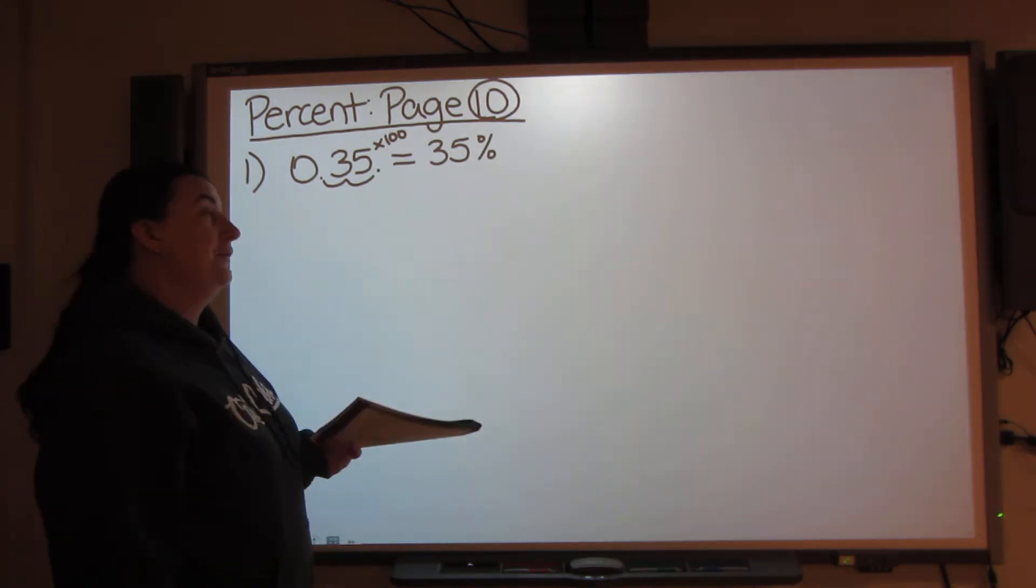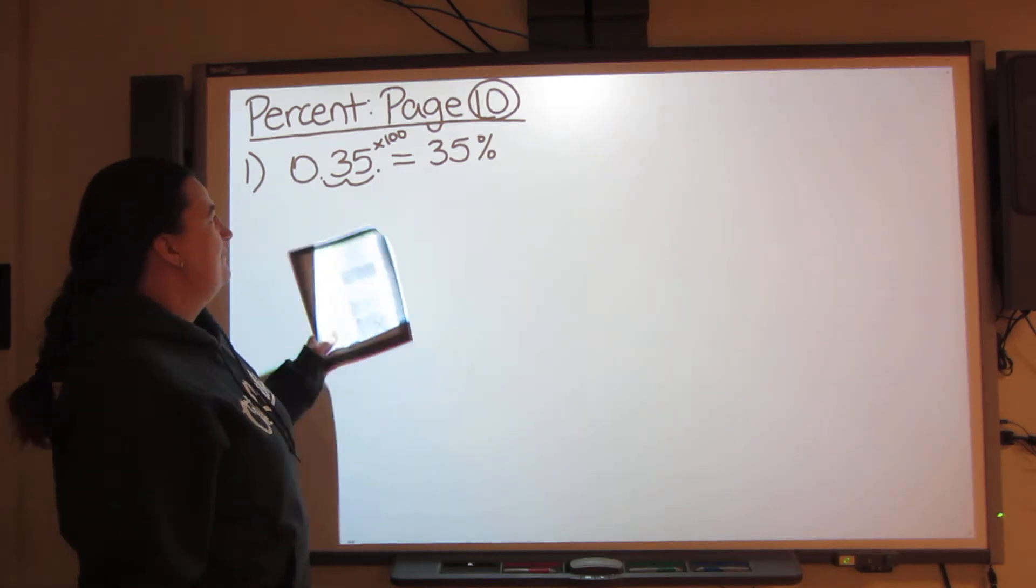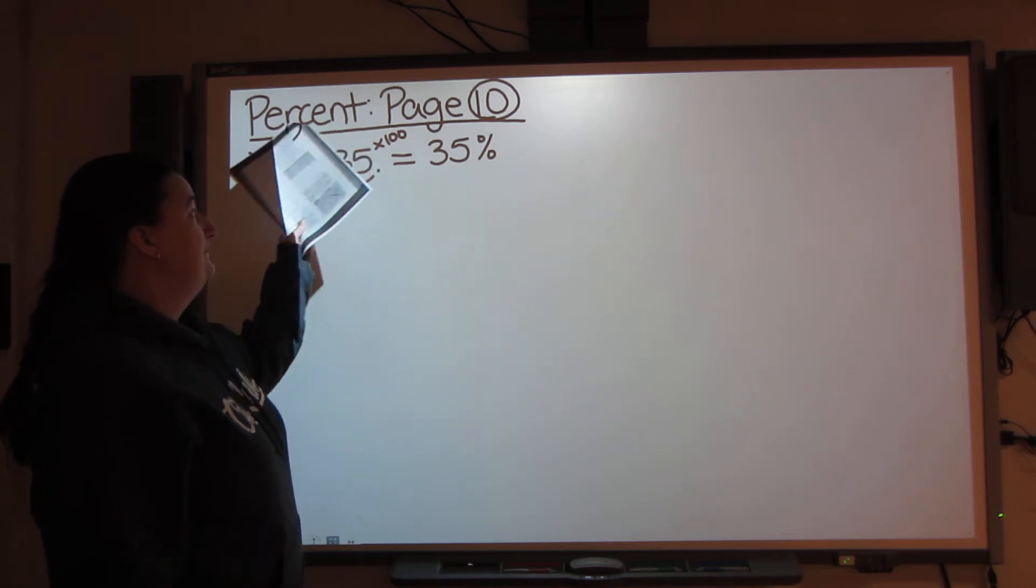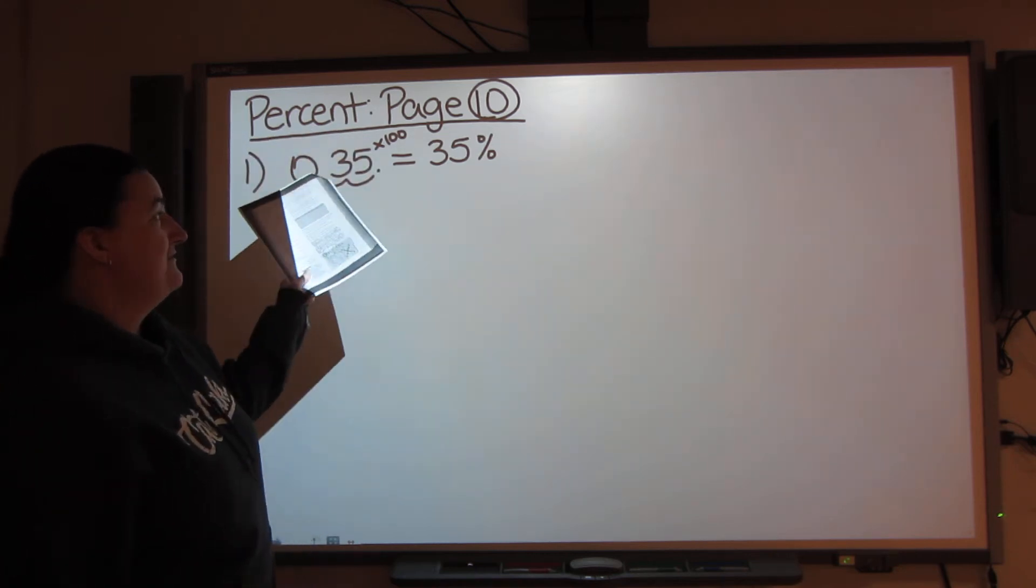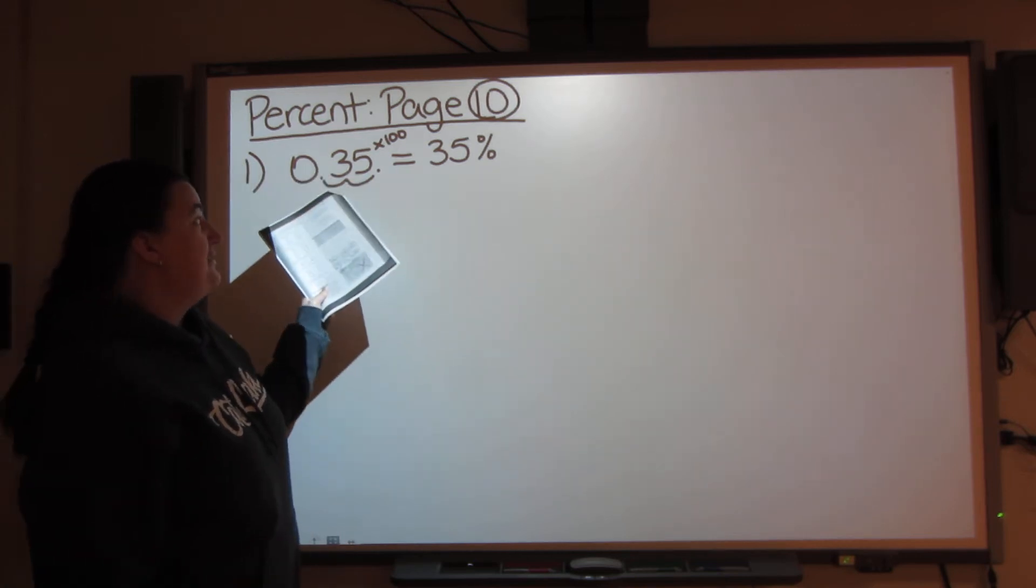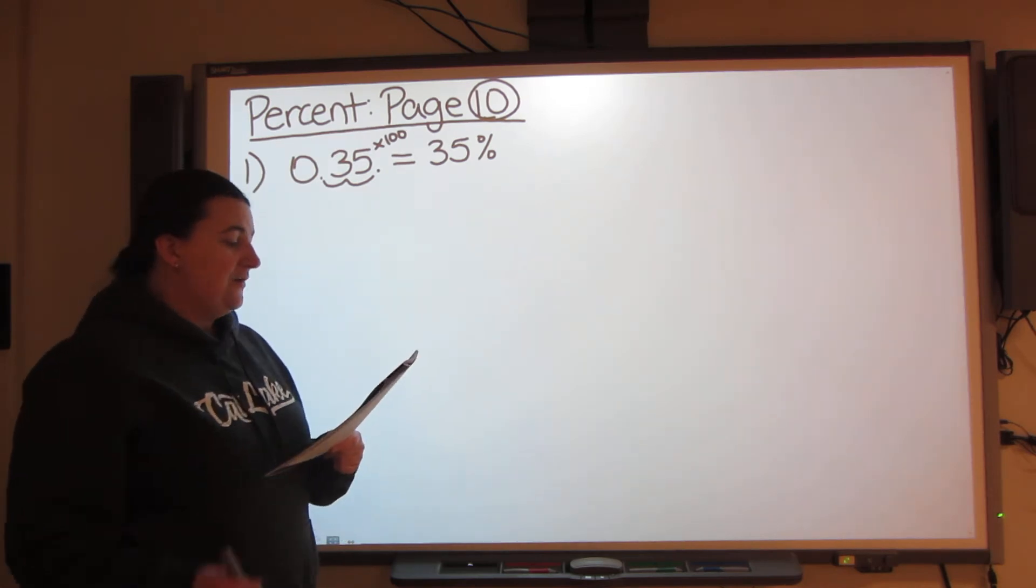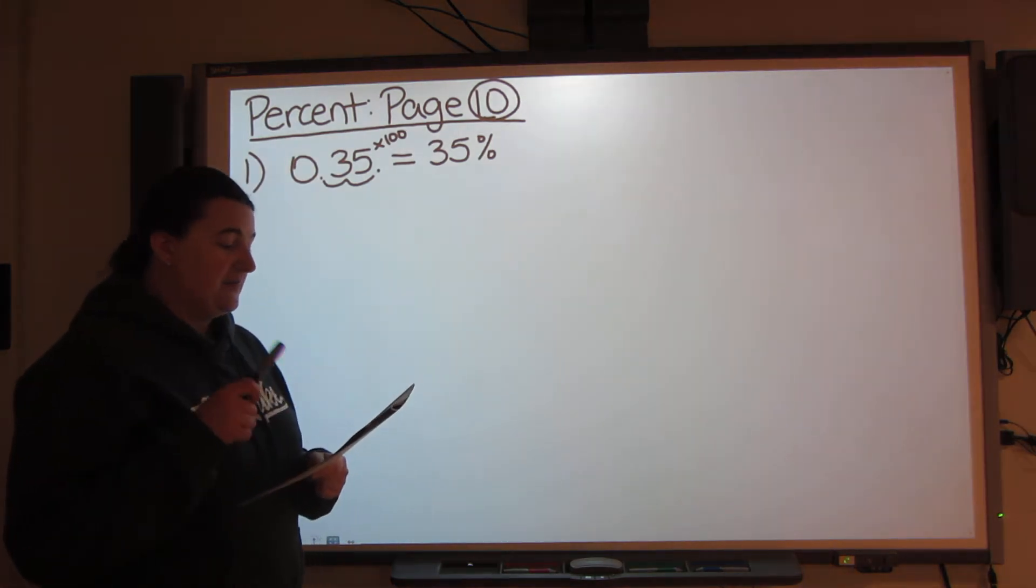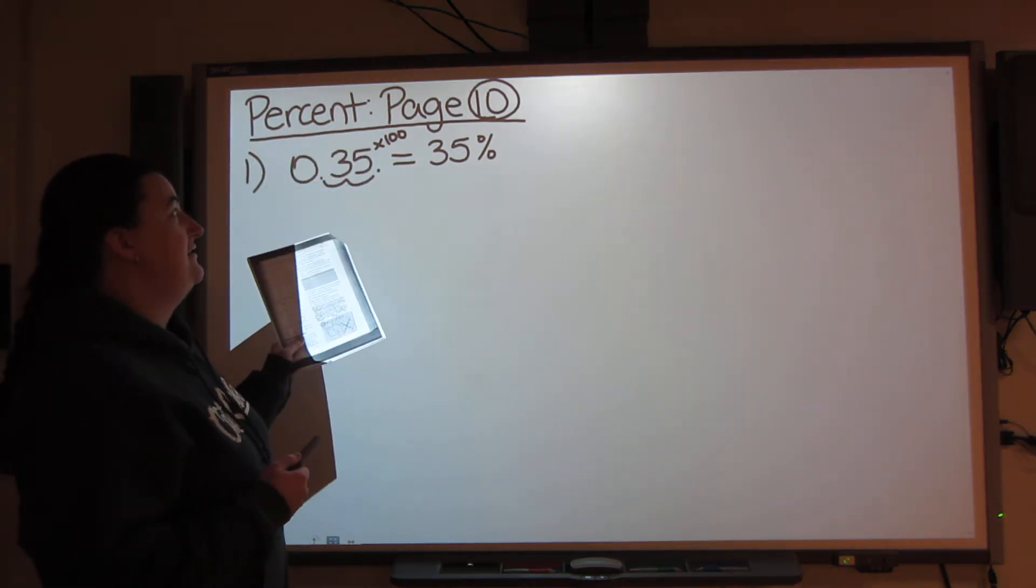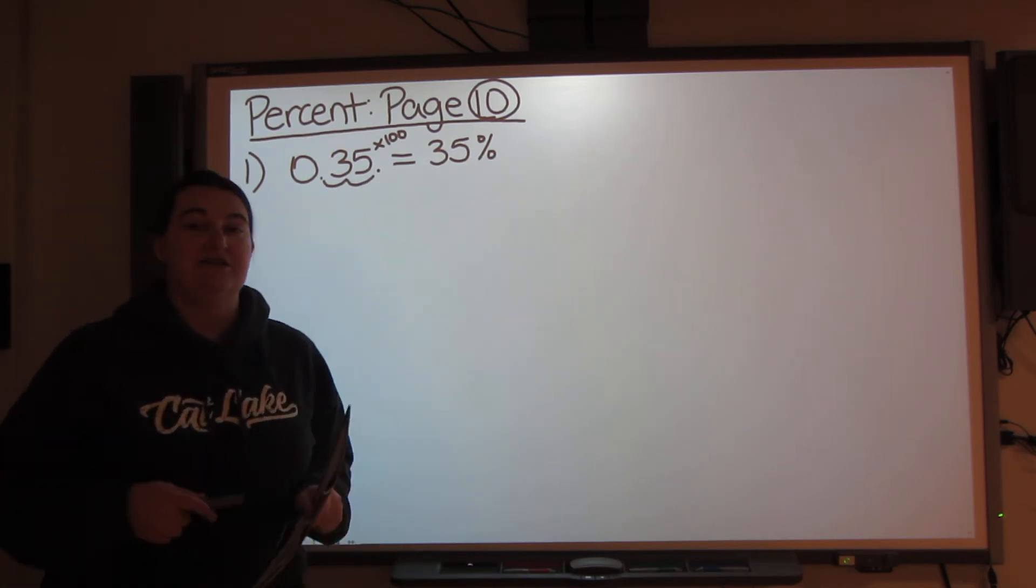35 or 35.0 is still 35. So you don't need to put it, you just need to make sure that you're moving it over so that you know you're changing the value of the number from 35 hundredths to 35 percent. So that's what you're going to do all the way from number one to number 12. You are going to take your decimal, times it by 100, move the decimal two spots over so that you get your percentage.